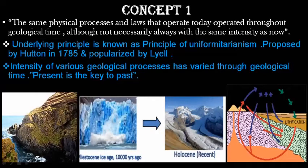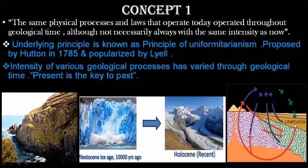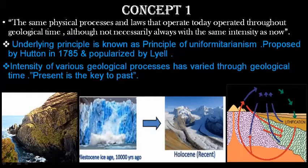Looking at the rock cycle diagram: mountains get eroded, the eroded material gets deposited, slowly forming rocks. Those rocks go underground beneath the Earth's surface, covered by other rock surfaces. After lithification, the material enters the Earth's crust and mantle, gets converted to magma, the magma comes out as volcanoes, solidifies into mountains, and this process goes on repeatedly.